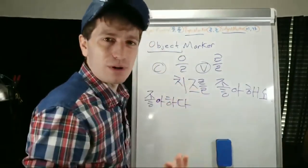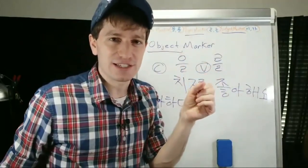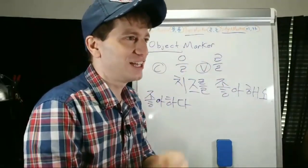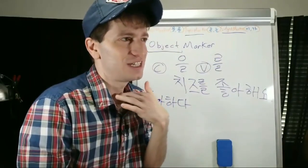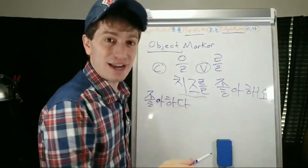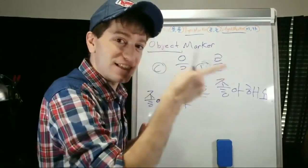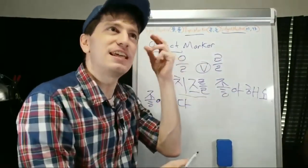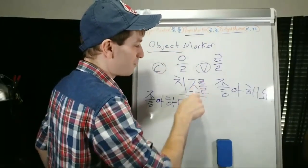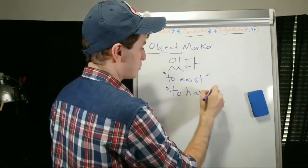Why is that important? Say someone barges in and asks, 'Where's my cheese? Who stole my cheese?' If you trail off without finishing the sentence, they hear 'cheese' with the object marker and they know you did something to the cheese — threw it away? Probably ate it. Because this object marker marks that this noun is the object of a verb.